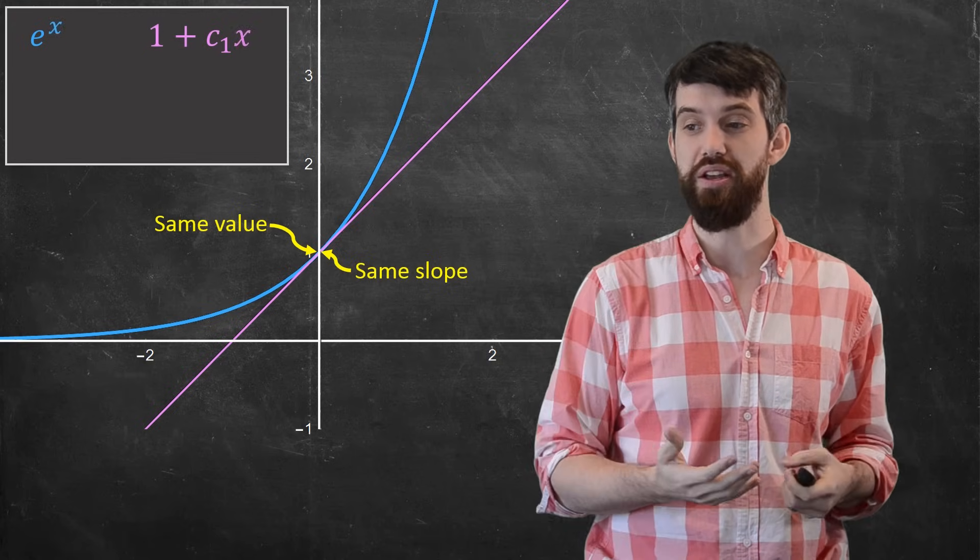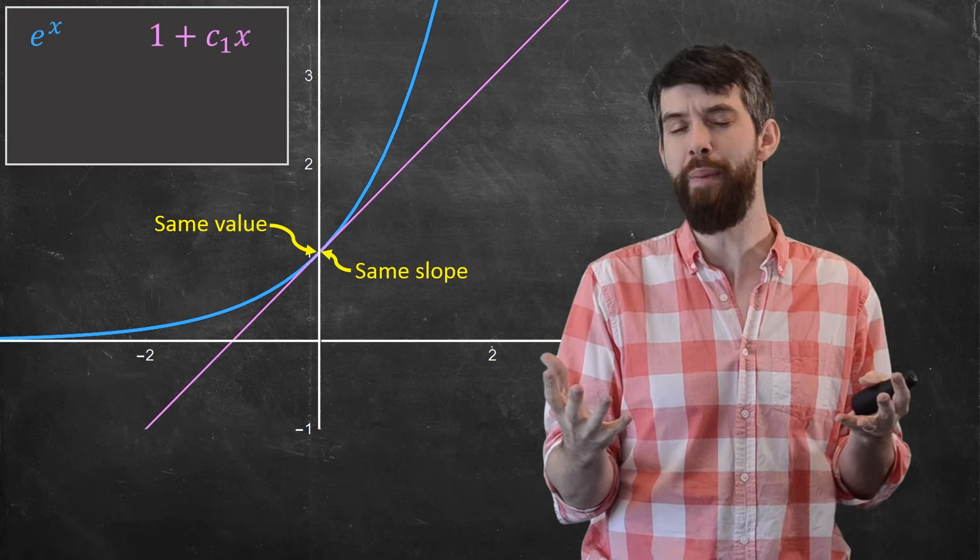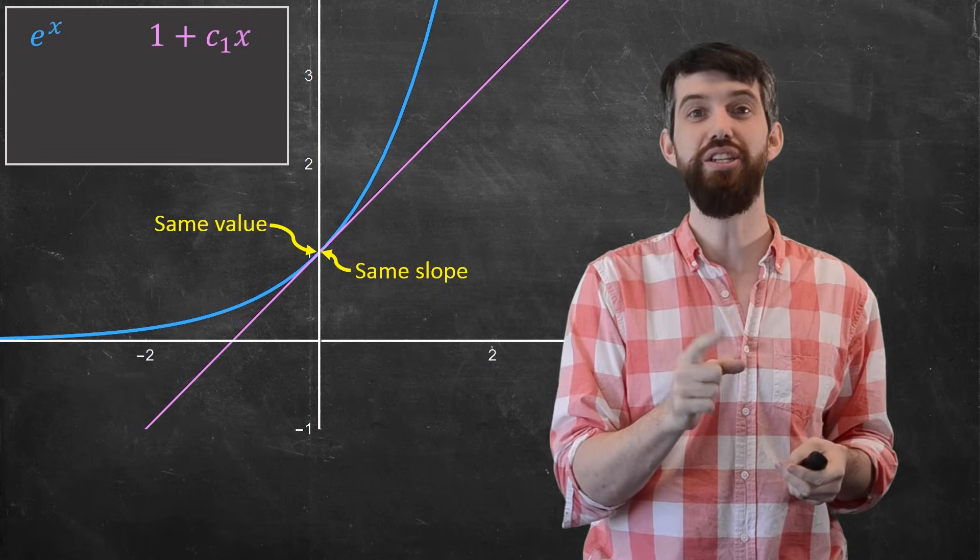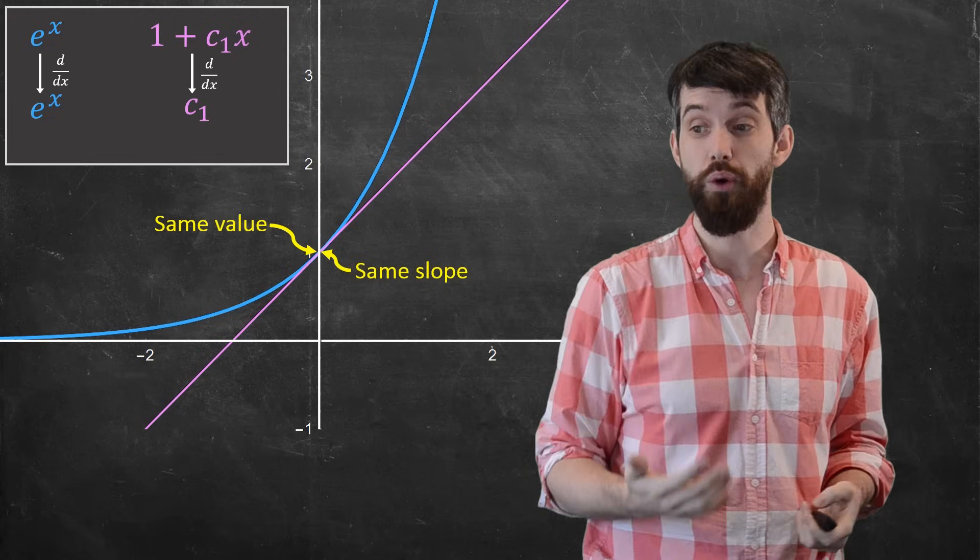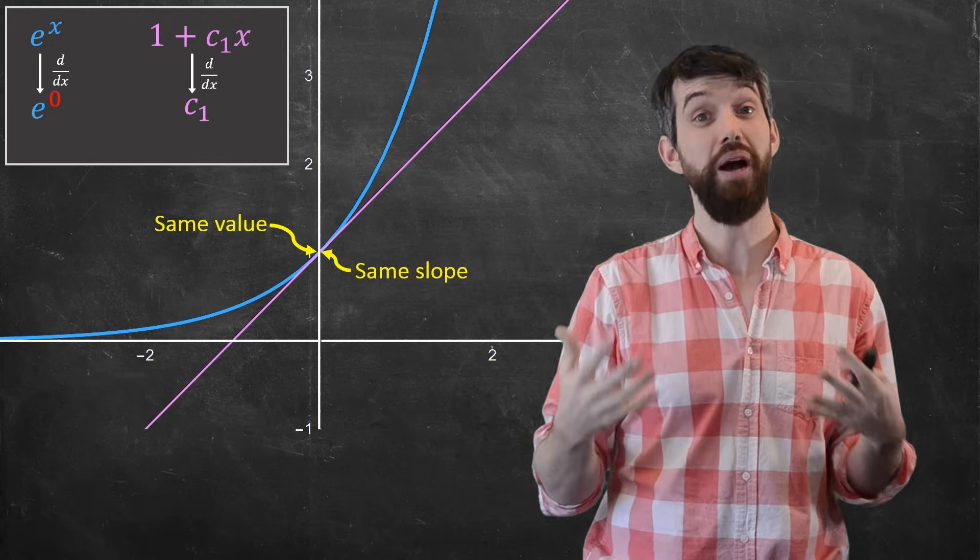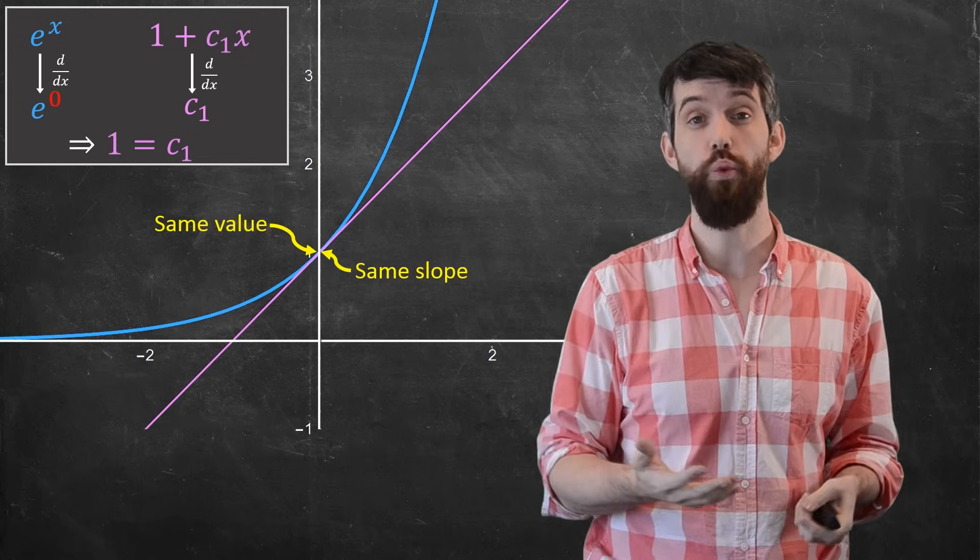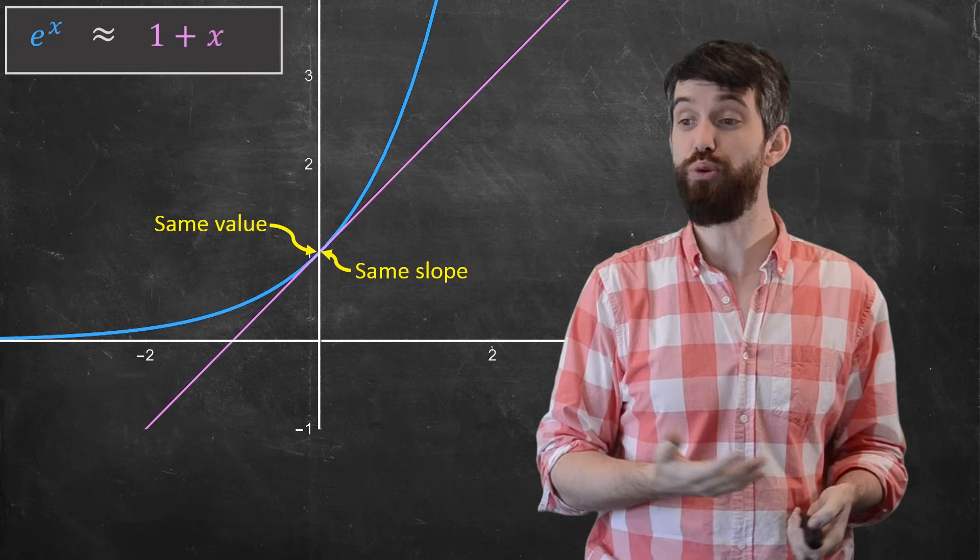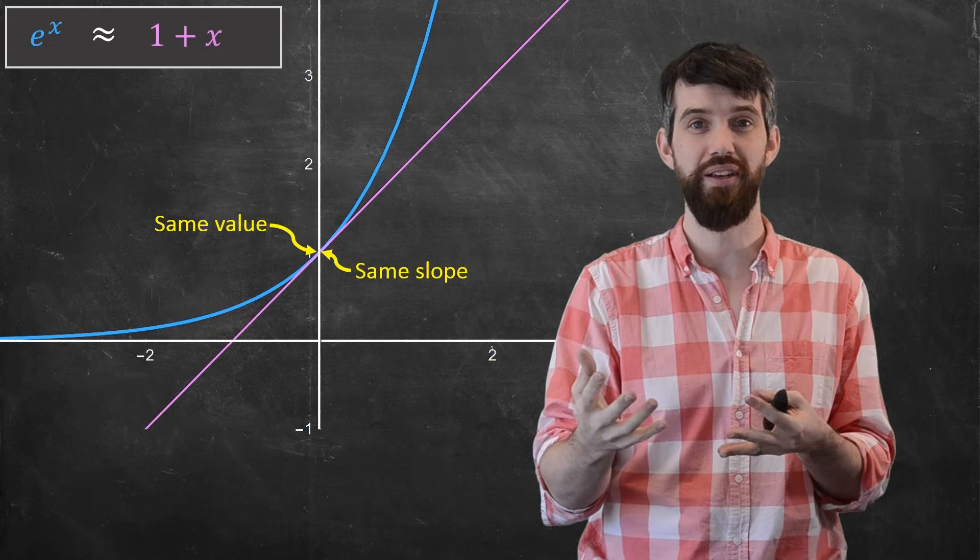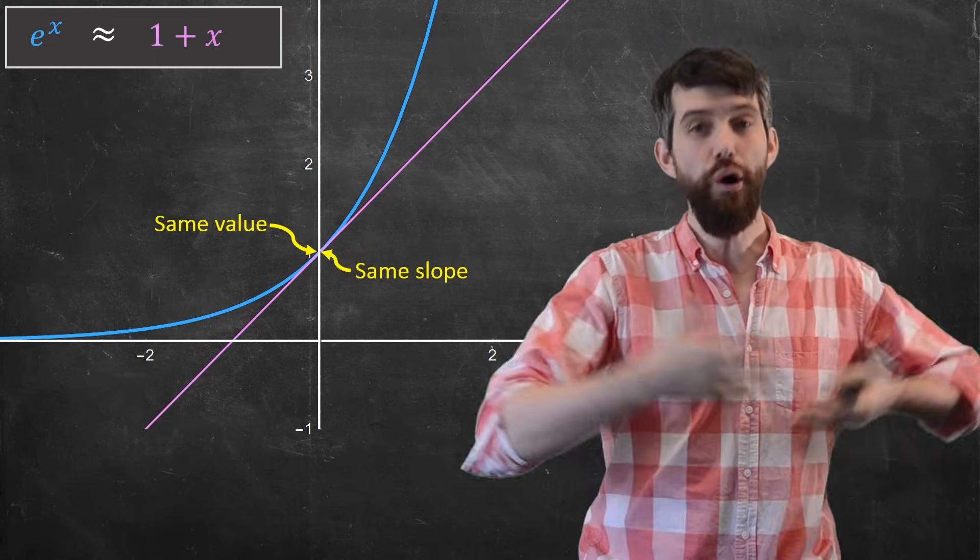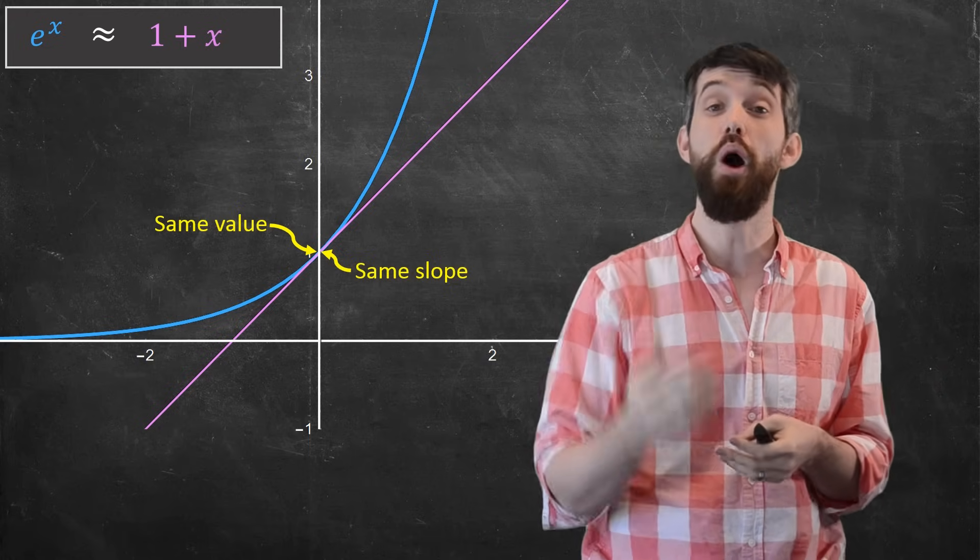Now I've got one plus some constant times x and e to the x, this is what I'm going to compare. But then what I'm going to do is take the slopes being equal. Now the slopes mean take the derivative. So I'll take the derivative of both, and then if I plug zero into that, e to the zero is again one, and I get that our c1 is one as well. So what do we have? Our approximation is then that this e to the x is being approximated by one plus x. Which is not to say that they're exactly equal. Indeed, far away from the value of zero, that becomes a worse and worse approximation. But nearby, it's not bad.